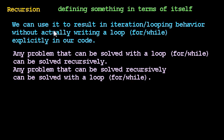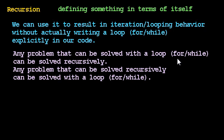In our last video, we learned that we could use recursion, where we define a method — or a function, if you're working in a language that isn't object-oriented — in terms of itself. We could use this idea to achieve looping behavior, as an alternative to using a for loop or a while loop. Anything we could use a for loop or while loop for, we can write a method that calls itself to achieve that looping behavior, and vice versa.